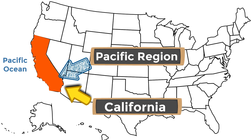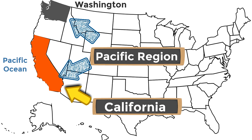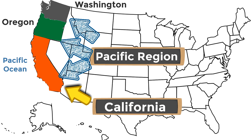Because California borders the Pacific Ocean, it belongs to a region known as the Pacific region. There are four other states in the Pacific region as well — they all border the Pacific Ocean. There is the state of Washington, which is part of the Pacific region, and then between Washington and California is the state of Oregon, also part of the Pacific region.